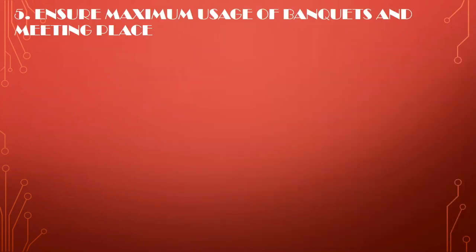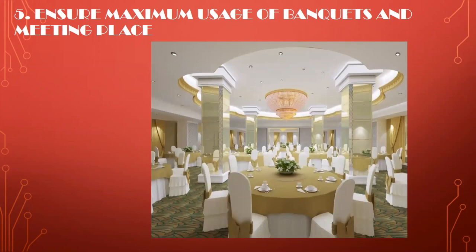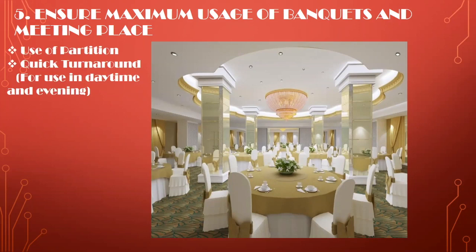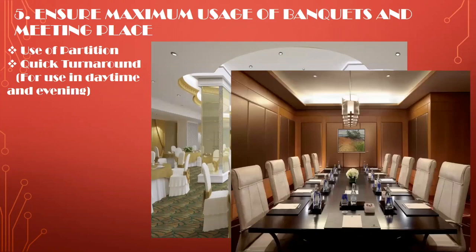The next step in ensuring maximum revenue is to maximize usage of banquet and meeting spaces. We can use partitions if the banquet hall is too large, and do a quick turnaround — for example, if a daytime event ends around 6 in the evening, housekeeping immediately cleans and spruces up the space so it can be sold again in the evening, ensuring the banquet space generates substantial revenue. These are the ways we ensure sales targets are met and revenue is always optimized.